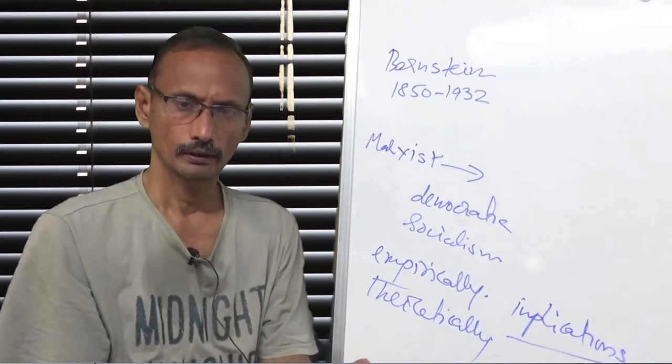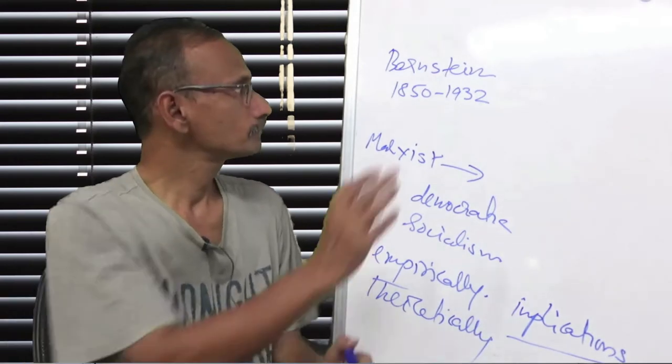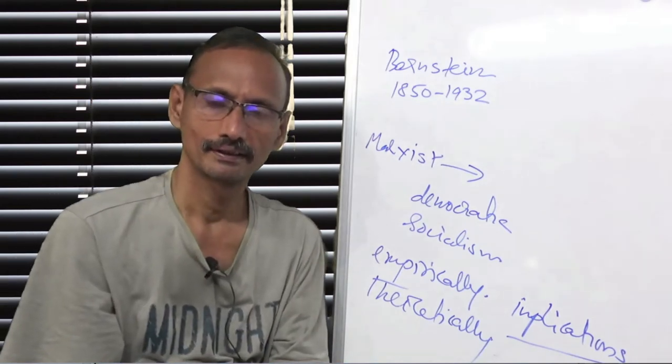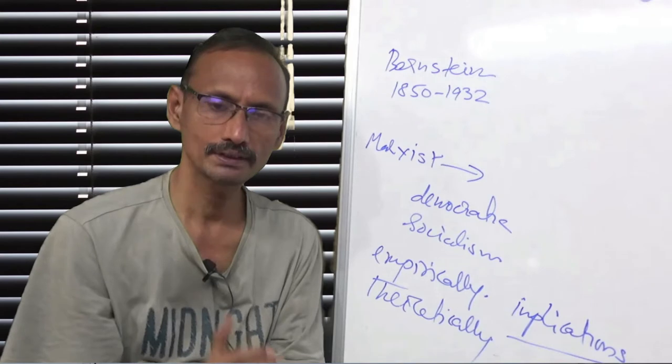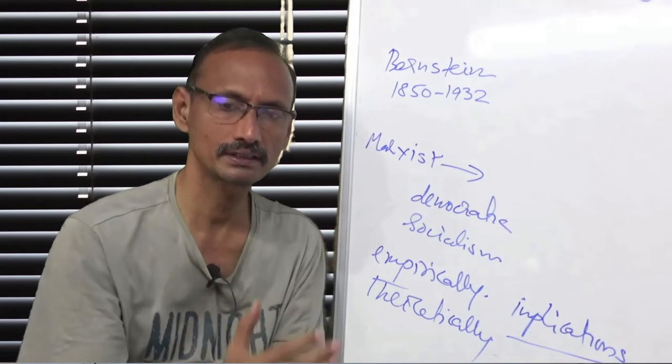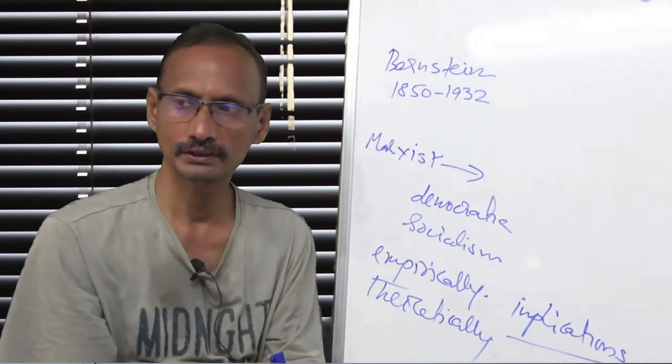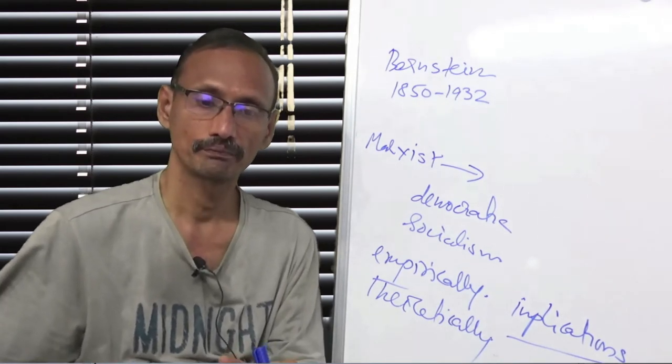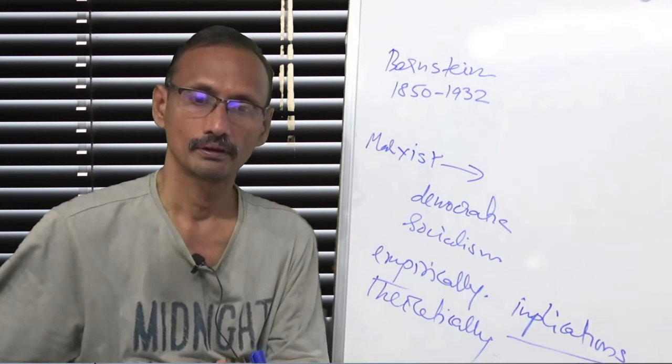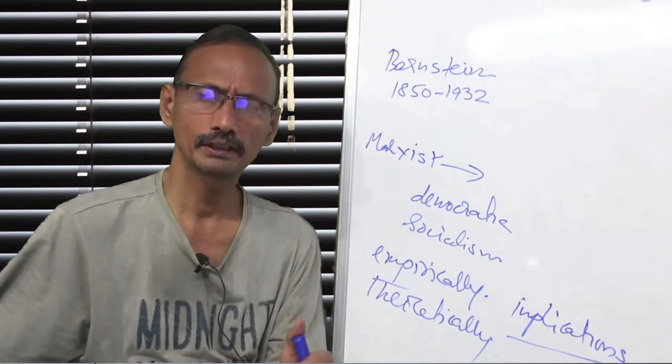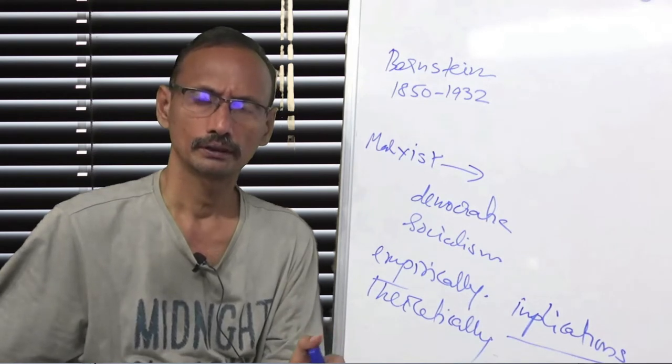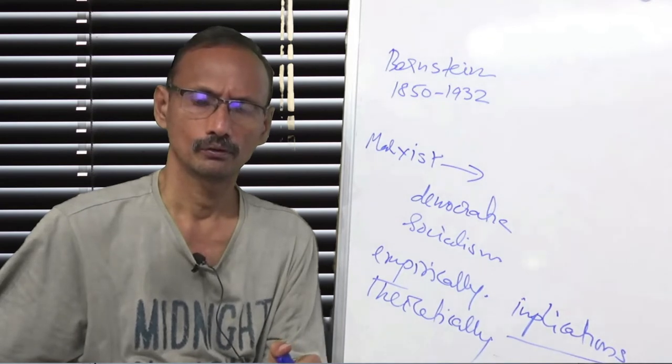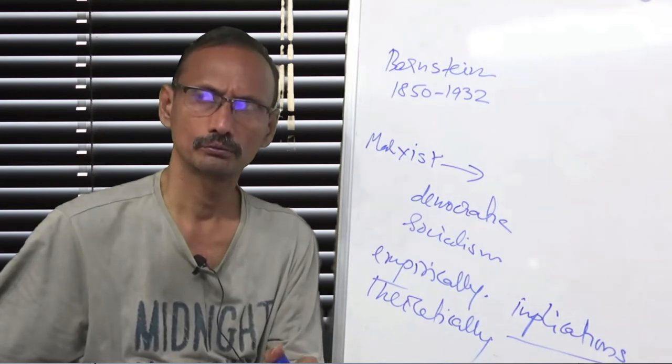Another thing is that he was very close to Engels, so he was the one who closely associated with how certain things were derived. And he clearly understood that communism developing around that time was a wrong turn to Marxism.